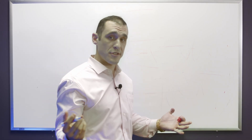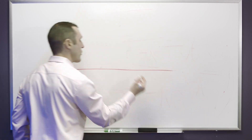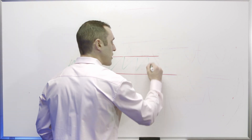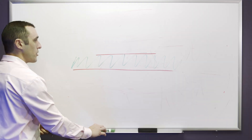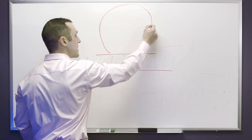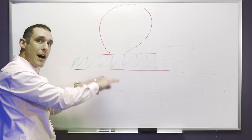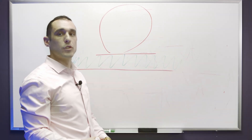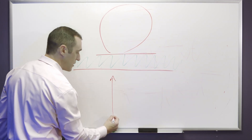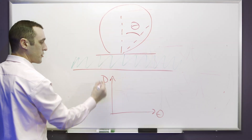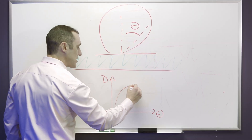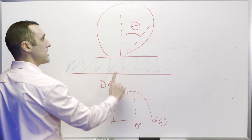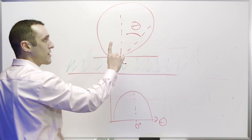The last thing to discuss is the directivity — the direction at which the patch antenna radiates. Located above a ground plane with a dielectric, the patch antenna radiates into a large lobe above the ground plane. The ground plane blocks radiation in the reverse direction, so it only radiates upward. A plot of directivity versus theta shows a maximum at zero degrees — maximum emission is straight perpendicular off the patch antenna.